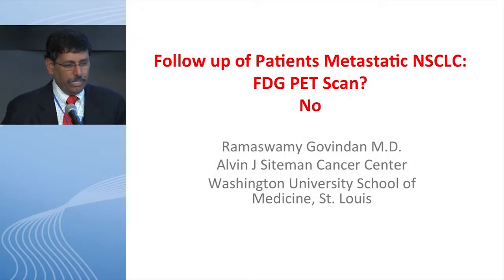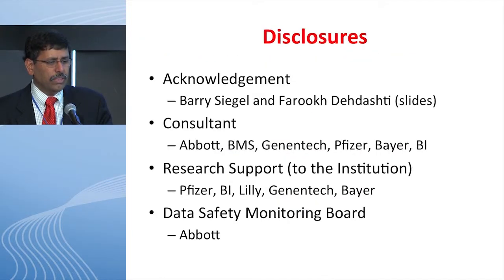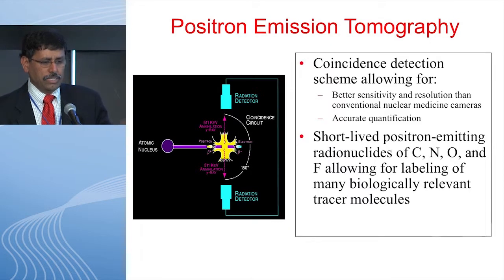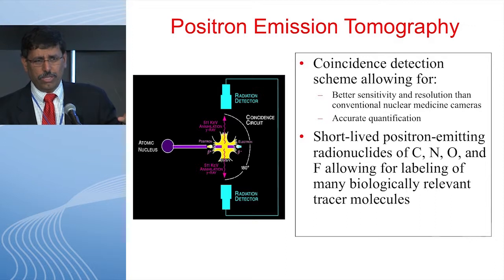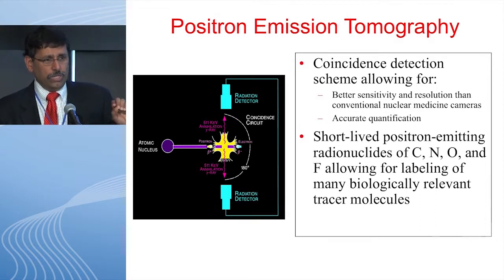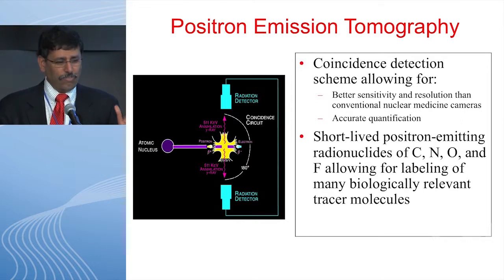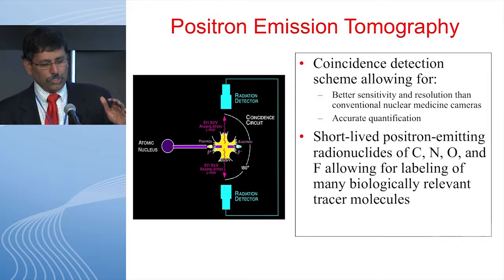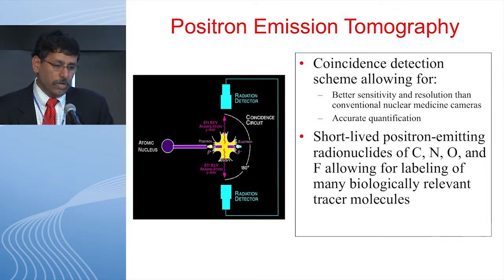The key thing to remember is that FDG glucose transport in the tumor is very much like routine glucose. It goes inside and gets metabolized by familiar enzymes. But after the first pass — after being phosphorylated by hexokinase — it gets trapped and cannot be metabolized further. That's how you image this.